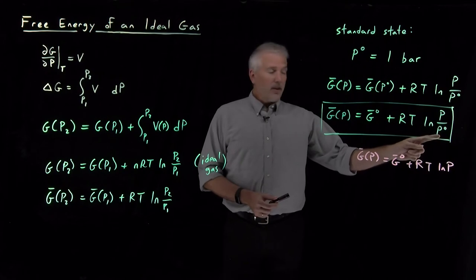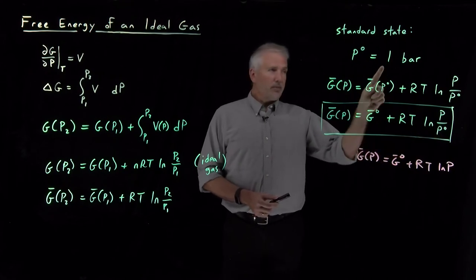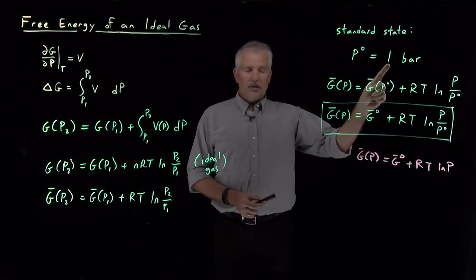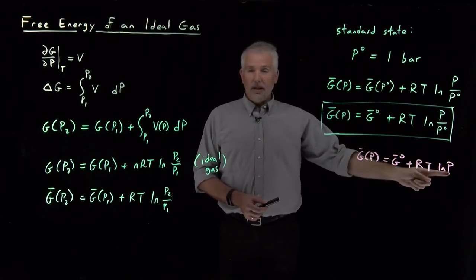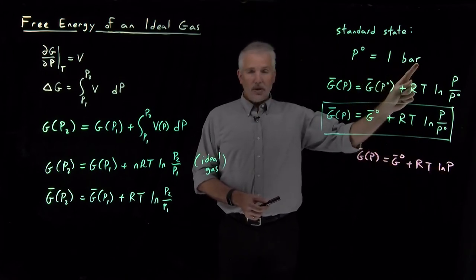First of all, we've dropped the P0. The reason it might be tempting to drop the P0 is P0 is just equal to 1. So P over P0, P divided by 1, that's just the same thing as P, right? But because this quantity has units on it, that's not quite a safe thing to do.